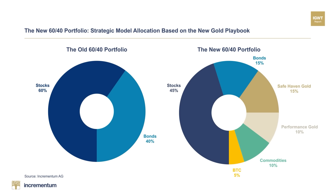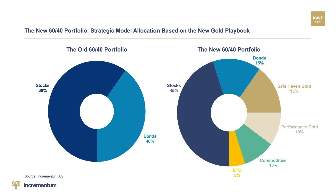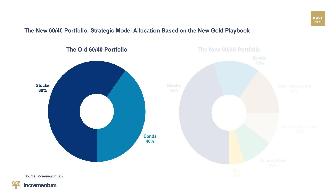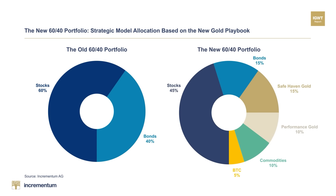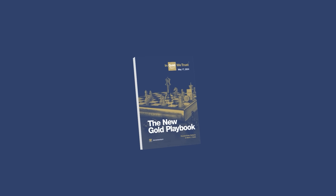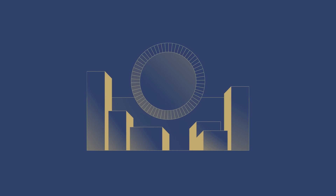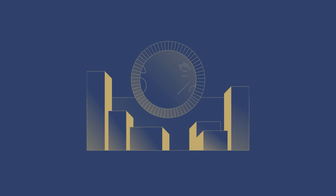We are therefore convinced that these two asset classes are indispensable in a portfolio that is to be prepared for the new playbook. A well-balanced portfolio aligned with the new gold playbook comprises 60% equities and bonds and 40% alternative asset classes. This marks a clear departure from traditional 60-40 portfolios. This positioning is not a rule set in stone, but rather a guideline based on current market conditions that will evolve over time. The new playbook applies as long as we are in a period of currency instability characterized by vast debt burdens and above-average inflation volatility — until we return to an environment with a stable hard currency, be it a sovereign hard currency or a gold-Bitcoin standard.